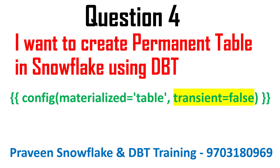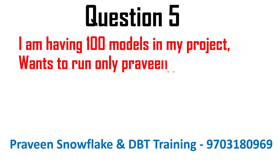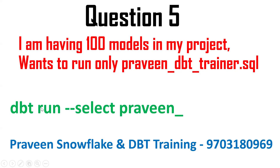The next question: I have 100 models in my project, but I want to run only a specific one — say, the model named 'praveen_dbt_trainer'. How can I do that? Simply use: dbt run --select <model_name>. So 'dbt run --select praveen_dbt_trainer' will run that specific model. We can also log into DBT Cloud and execute the same command there.